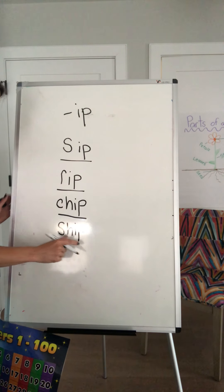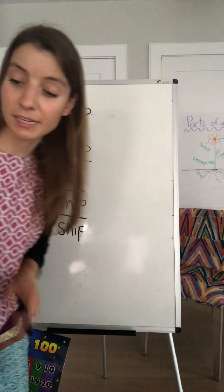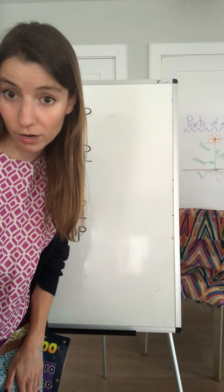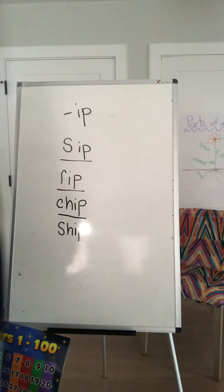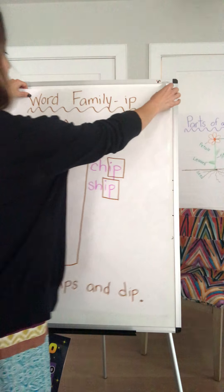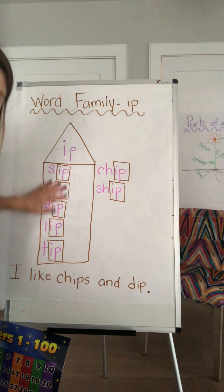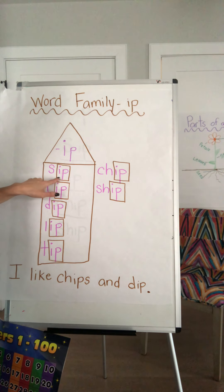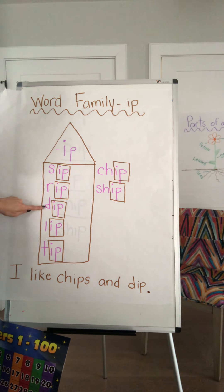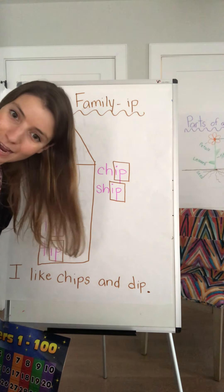Ship. So, these are just some examples of some -ip words in our -ip word family. Remember we did this yesterday? All of these words have those two letters at the end: sip, rip, dip, lip, tip, chip.